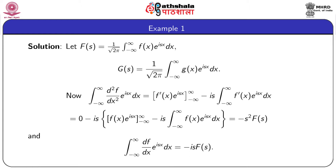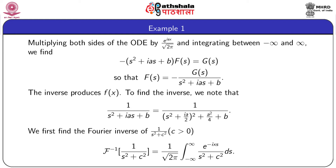Next, we evaluate the integral from -∞ to +∞ of (df/dx)·e^(isx) dx. Again, integrating by parts and using the condition that f → 0 as |x| → ∞, we obtain this integral as -is·F(s). With this result, we multiply both sides of the given ODE by e^(isx)/√(2π) and integrate between -∞ to +∞ with respect to x.